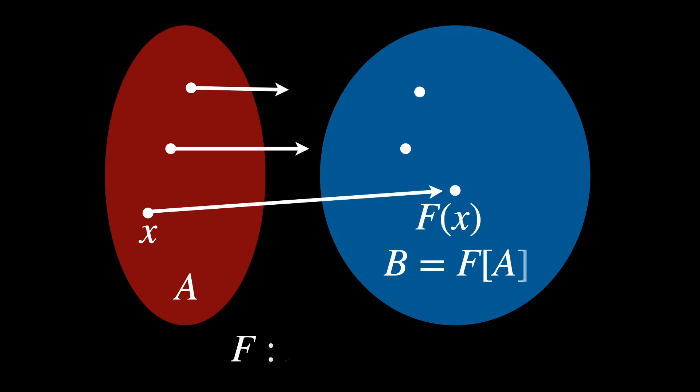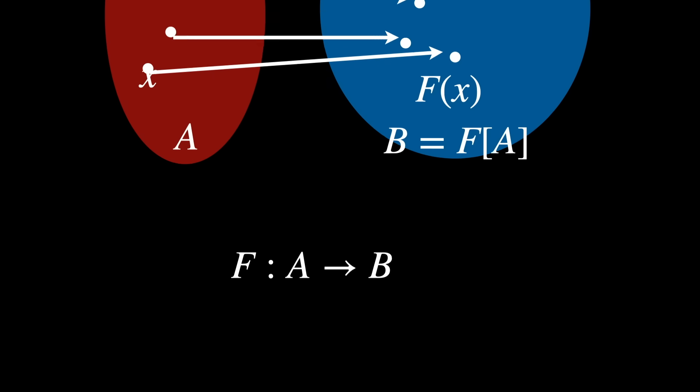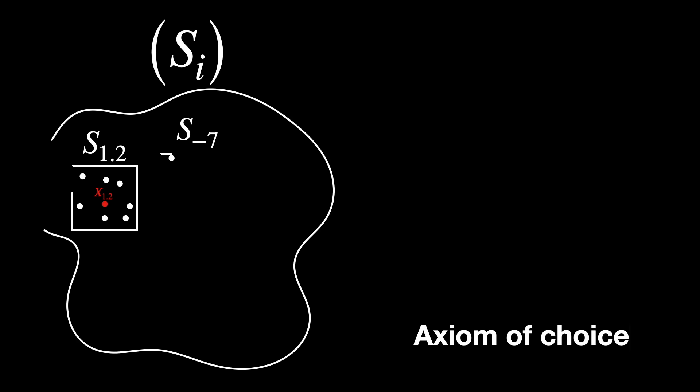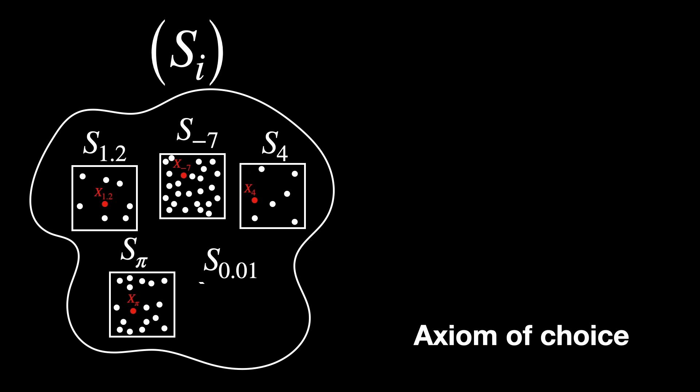They define the rules by which sets can be constructed and manipulated, and include the axiom of choice. It has implications in many fields of mathematics.